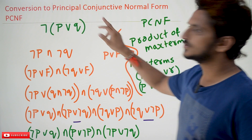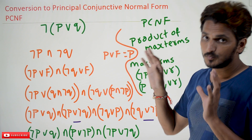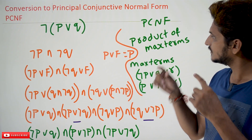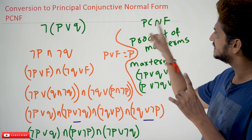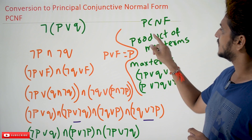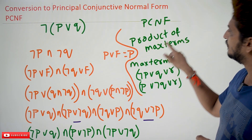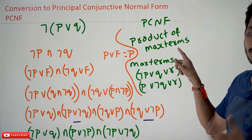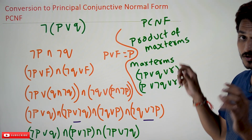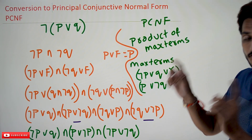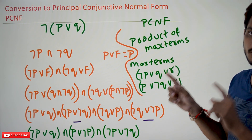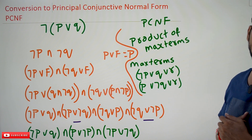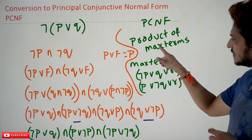before we move on to the conversion example, let's refresh what PCNF means: product of max terms. If your equation is in the form of a product of max terms, then we call it Principal Conjunctive Normal Form.